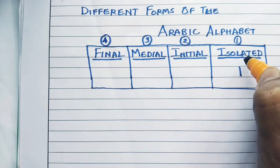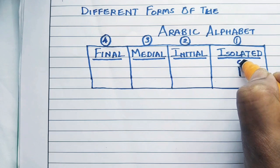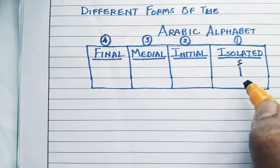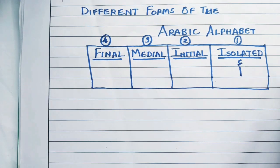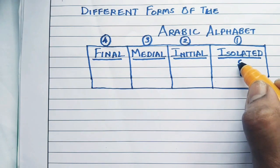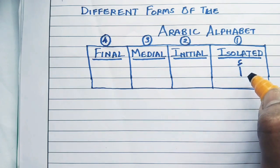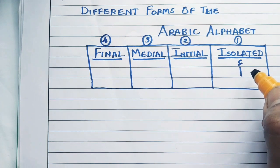But when we are saying A, it's Hamza and not Aleph. Aleph is just a straight line, and when we write Hamza over Aleph or above Aleph, it's Hamza and not Aleph. So it's A.